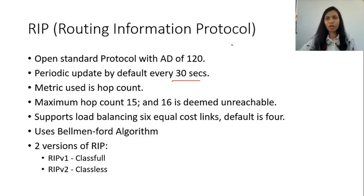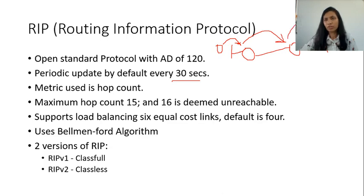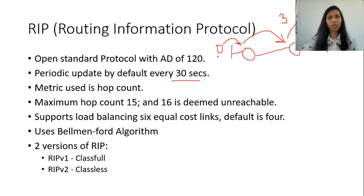If you have a source and destination with two routers in between, a packet from the source must go to the first router, then the second router, then the destination — that is the first hop, second hop, and third hop. So the destination is three hops away from the source. In case of RIP, the maximum hop count is 15 and 16 is deemed unreachable. So you can have a hop count of maximum 15 in RIP. If the hop count becomes 16, that particular route is deemed unreachable.